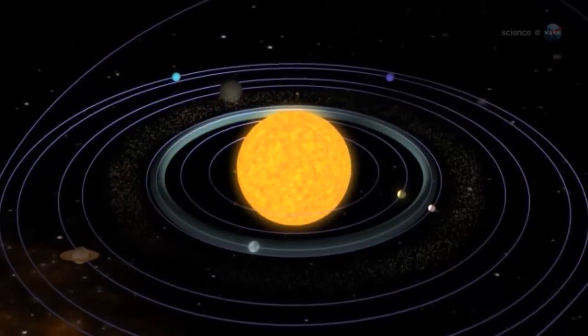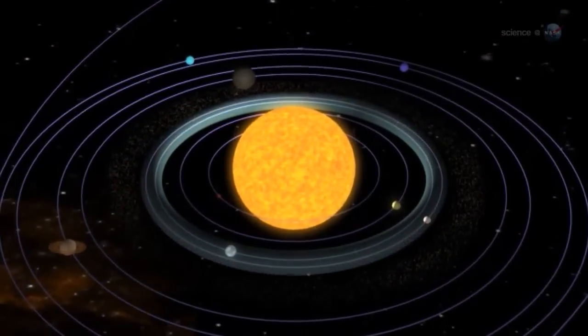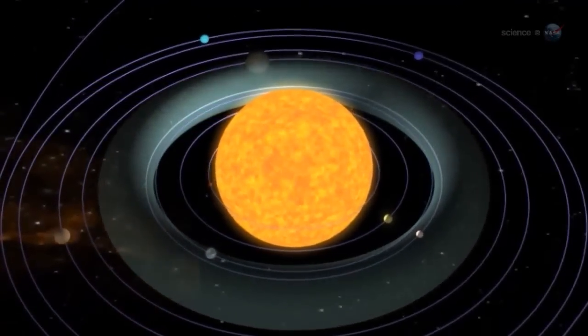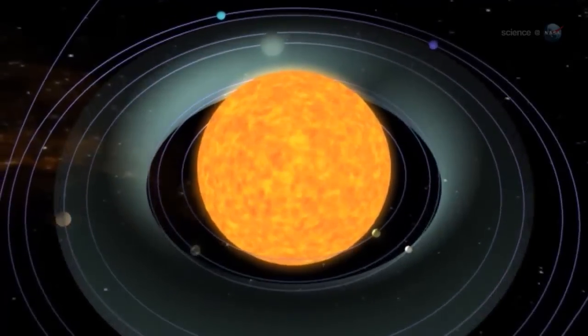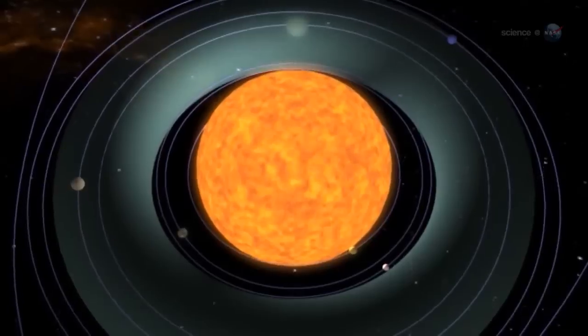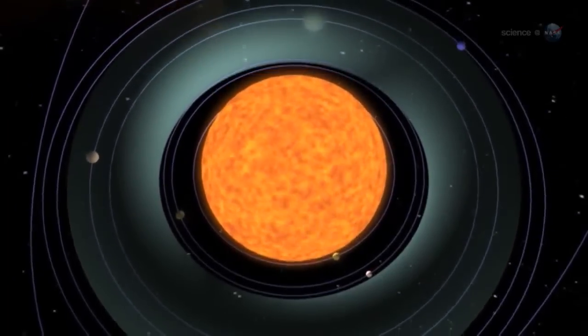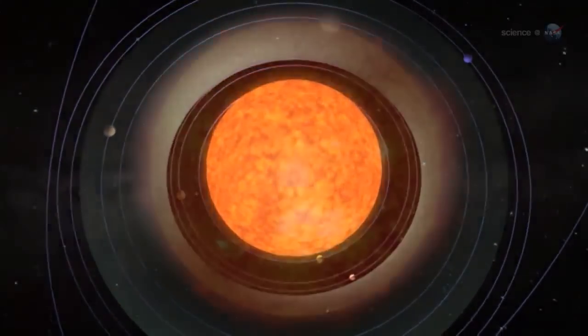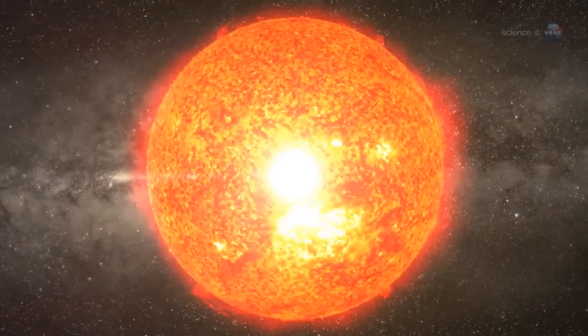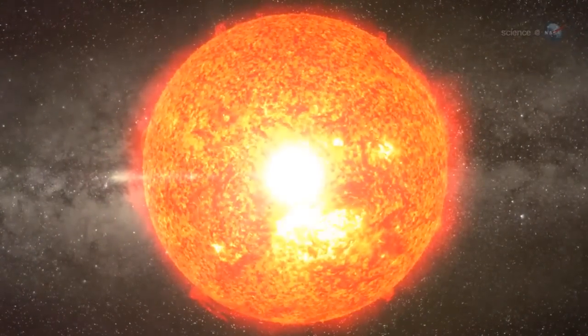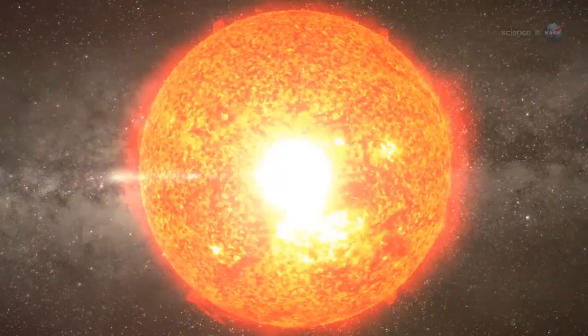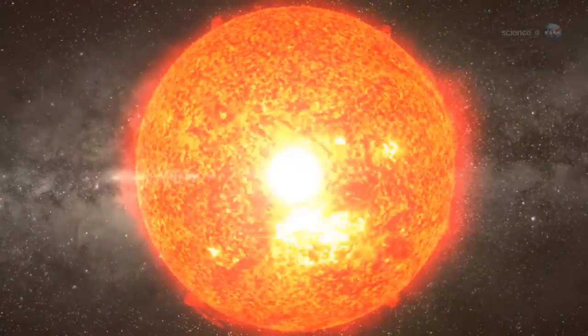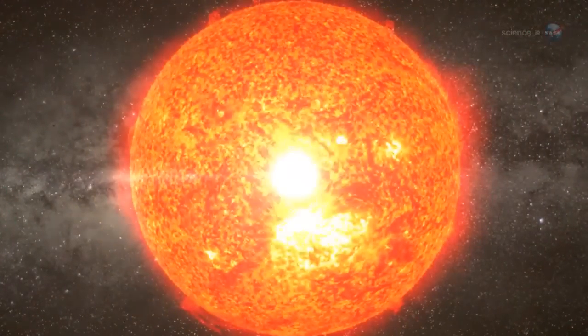Researchers who specialize in stellar evolution have long known that the inner planets are in danger. The trouble starts in the distant future when the Sun's core runs out of hydrogen fuel for nuclear fusion. To keep the fires burning, the Sun will begin to fuse hydrogen outside the core in a layer closer to the stellar surface. This will turn the Sun into a red giant at least 200 times wider than it is today.